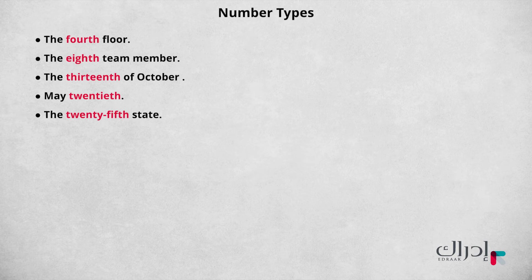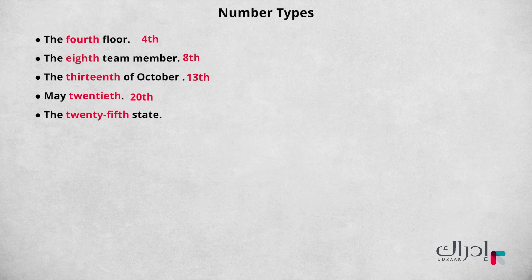What are the ordinal numbers in the examples? If you guessed the following — fourth (4th), eighth (8th), thirteenth (13th), twentieth (20th), twenty-fifth (25th) — then you are correct.